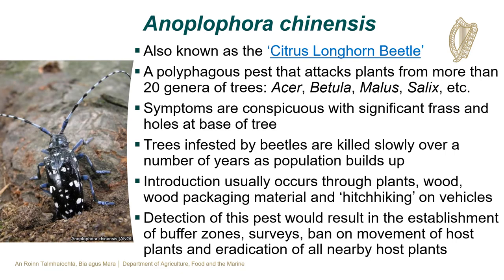Anoplophora chinensis is more commonly known as the citrus longhorn beetle. It is a polyphagous pest that attacks plants from more than 20 genera of trees, including Acer, Betula, Malus and Salix. The symptoms are conspicuous, with significant frass and holes at the base of any infected tree. Trees are killed slowly over a number of years as the population builds. Introduction usually occurs through plants, wood, wood packaging material and hitchhiking on vehicles. Detection would result in the establishment of buffer zones, surveys, a ban on the movement of host plants and the eradication of all nearby host plants.